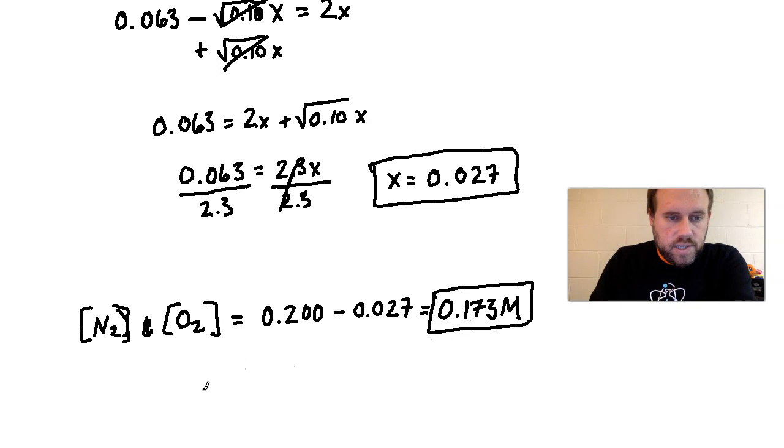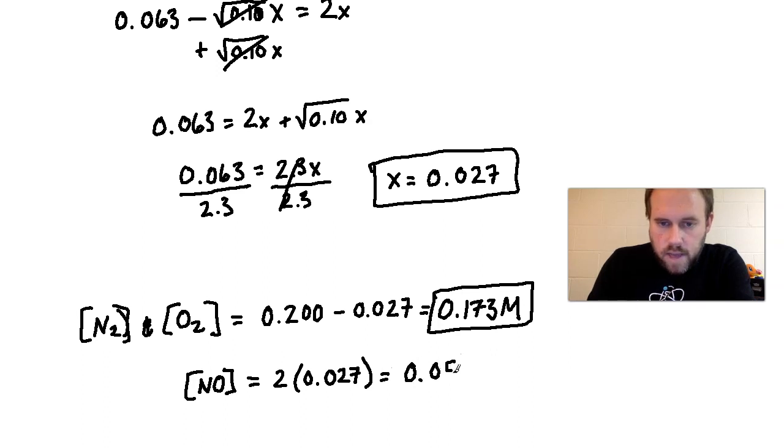And then the last one is pretty simple. It's the concentration of NO. And for the concentration of NO, what did we have? It was 2X. So we're going to take 2 times the 0.027. And then that would give us a value of 0.054. So 0.054 molarity.